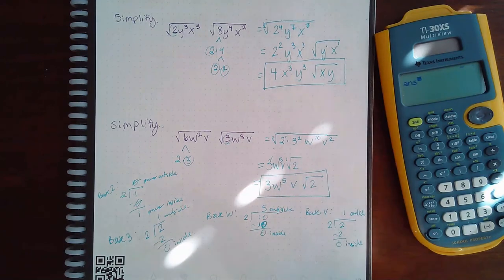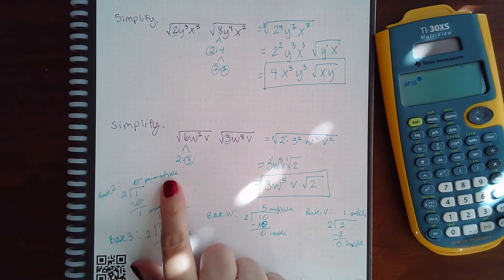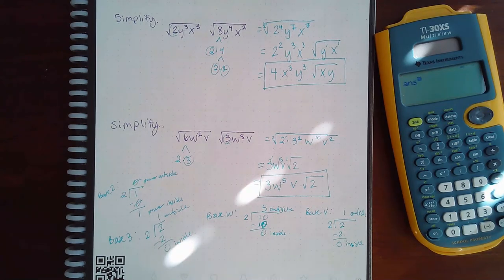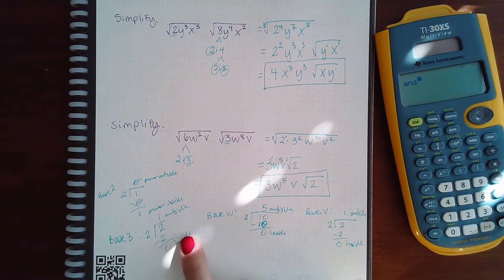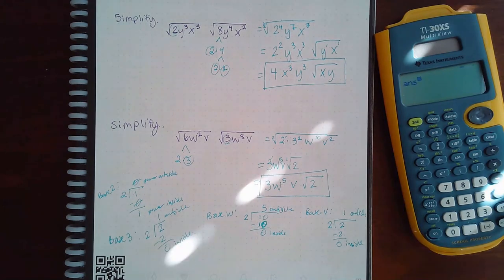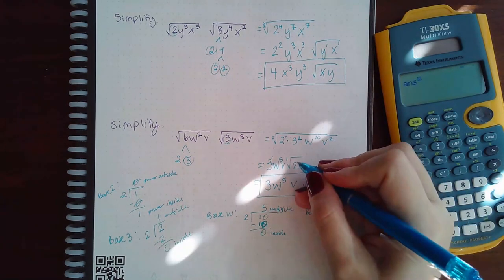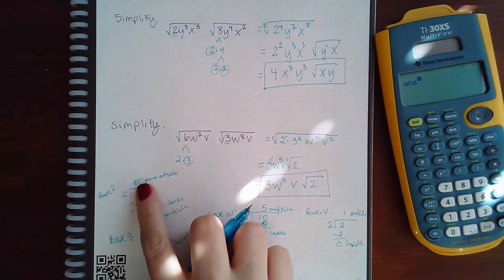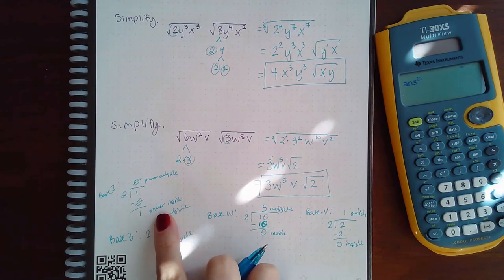We're literally just dividing the exponents, and then however many times it goes in, that's how many of that base are on the outside. However many are left over as far as your remainder, that's how many of that base are stuck inside. Like this should have been 1, right? Zero came out but I still have 1 power inside.